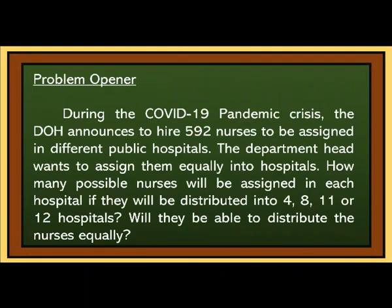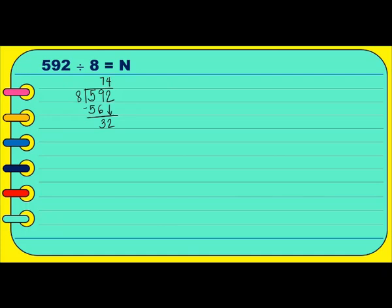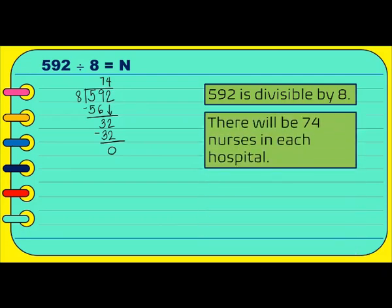Let's go back to the problem. Now, let's try dividing 592 by 8. 5 divided by 8 cannot proceed, so we go with 59. 59 divided by 8 is 7. 7 times 8 is 56. Subtract. 59 minus 56 is 3. Bring down 2. 32 divided by 8 is 4. 4 times 8 is 32. Subtract. 32 minus 32 is 0. So, the answer is 592 divided by 8 is 74. Therefore, 592 is divisible by 8. There will be 74 nurses in each hospital.